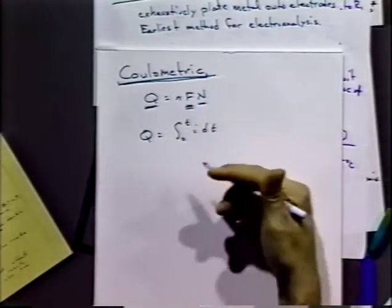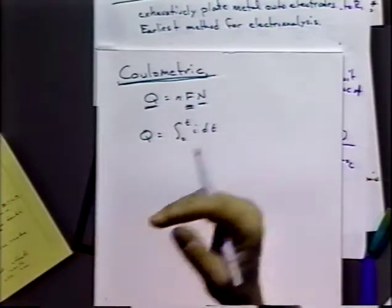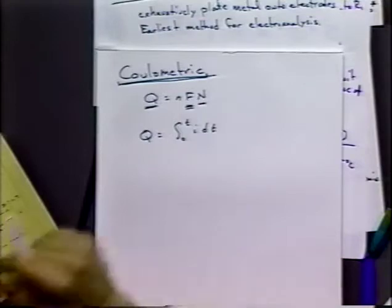So you do the reaction for a certain amount of time, you take the total current that passes during that period of time, integrate it, and now you've got the charge.